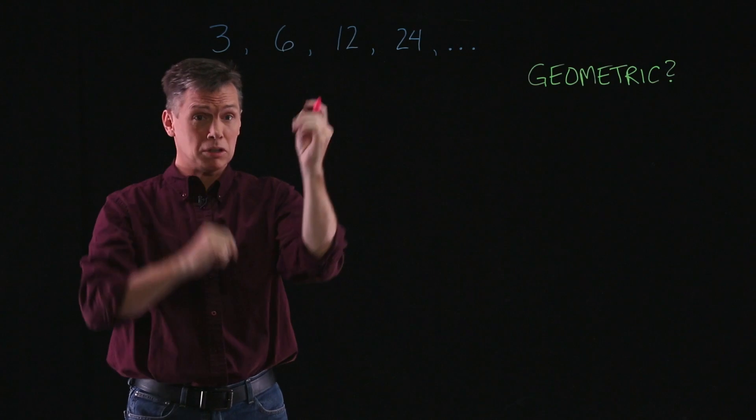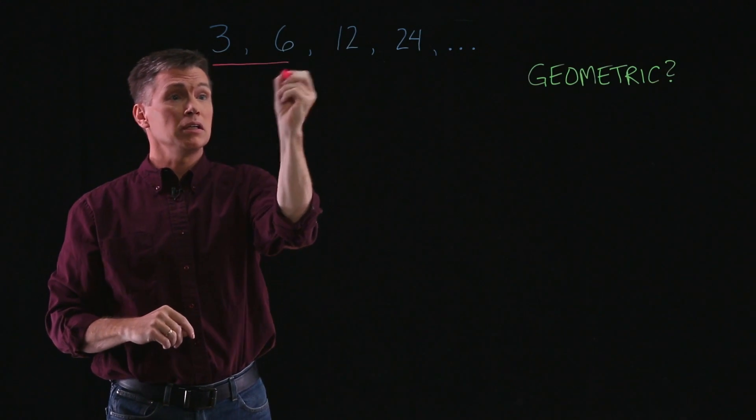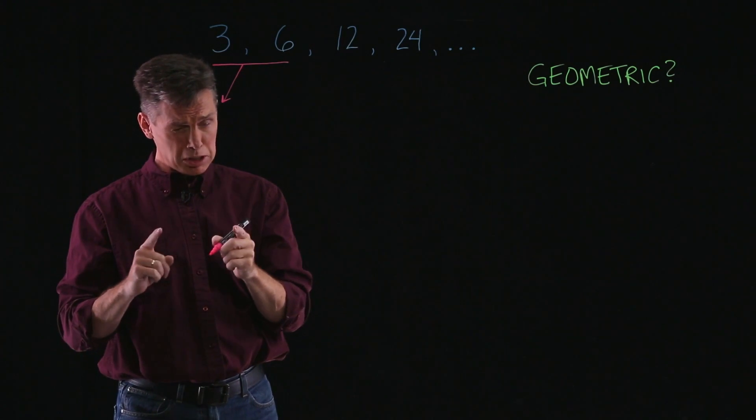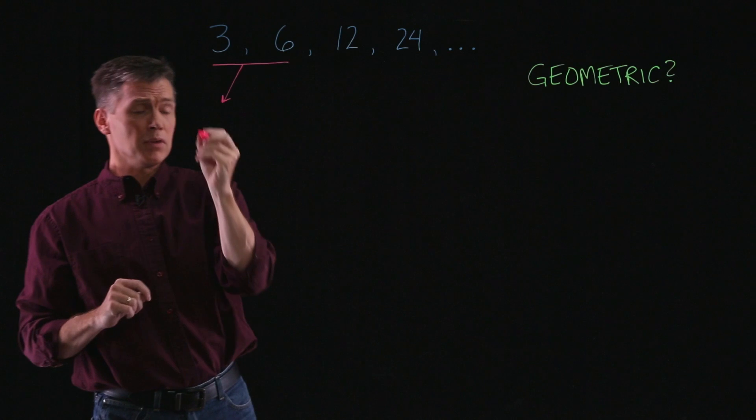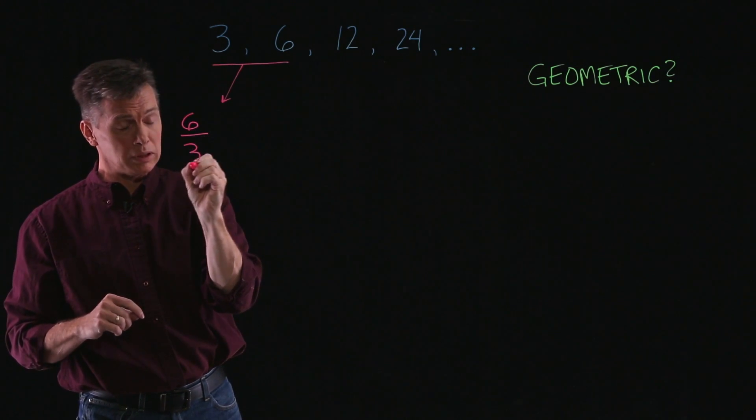What we do is grab consecutive terms, so one right after the other. In this case, let's grab the 3 and the 6, and you divide them. If we're looking for a ratio, you want to think division. And I'm going to divide the later one divided by the earlier one.